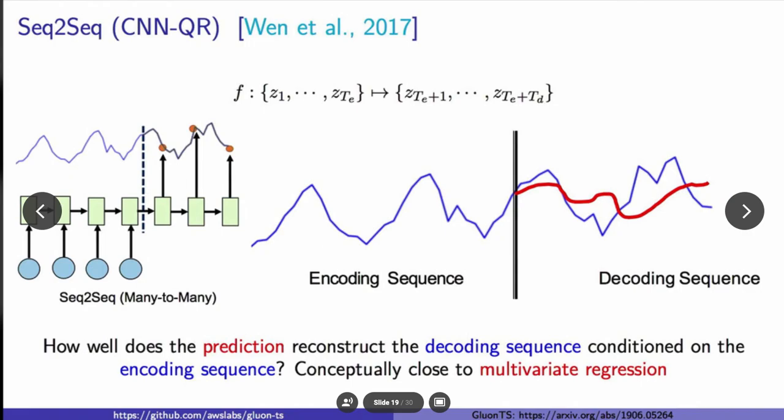Here's an example of a sequence-to-sequence model now, which you can think of as an encoder-decoder model. How well does the prediction reconstruct the decoding sequence given an encoding sequence? This is similar to multivariate regression. Within GluonTS, we provide a flexible sequence-to-sequence framework, so you can even build your own sequence-to-sequence models. Here we provide CNNQR, which is a variant of MQRNN, defined in the above paper.